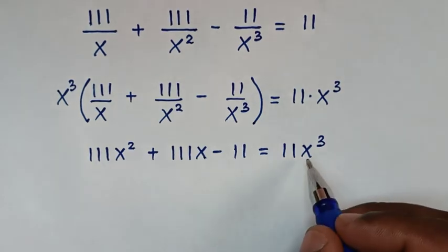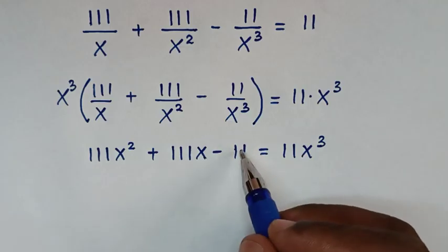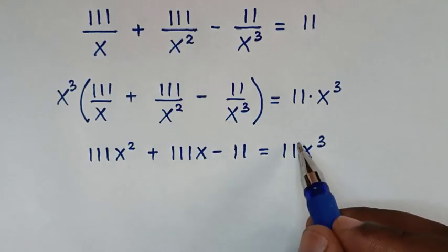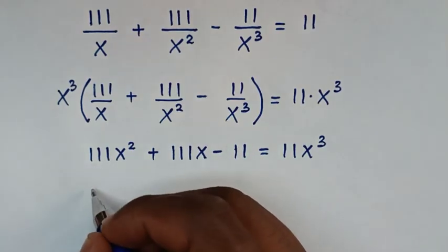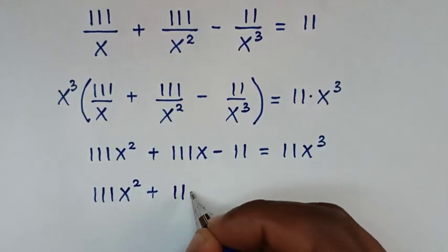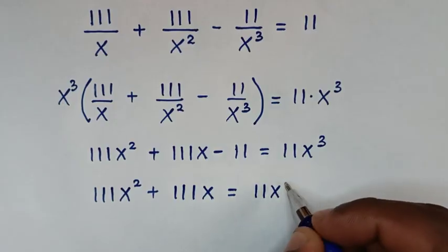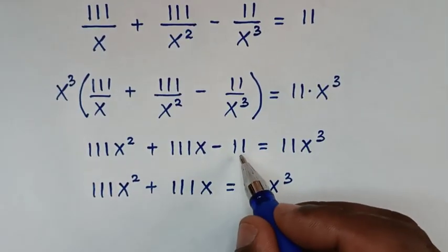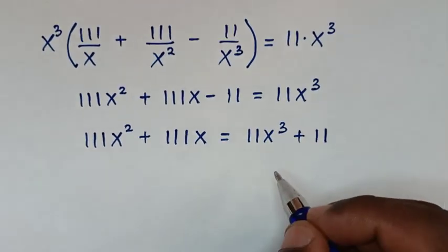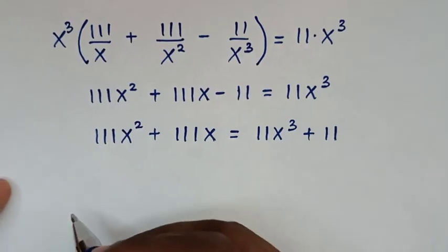From the coefficient of x power 3 is 11 on the right side, and we have the constant negative 11 on the left, we'll move it to the right side. So we have 111x squared plus 111x on the left, equal to 11x power 3, and negative 11 moved over becomes plus 11 on the right.